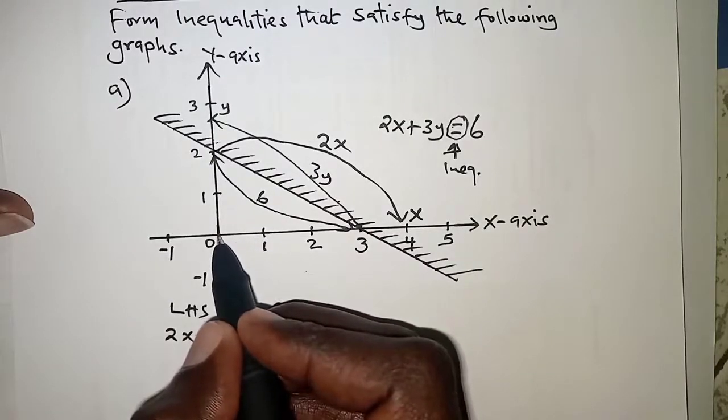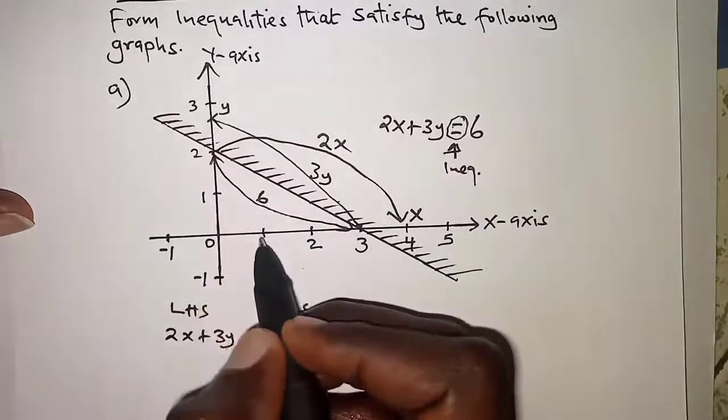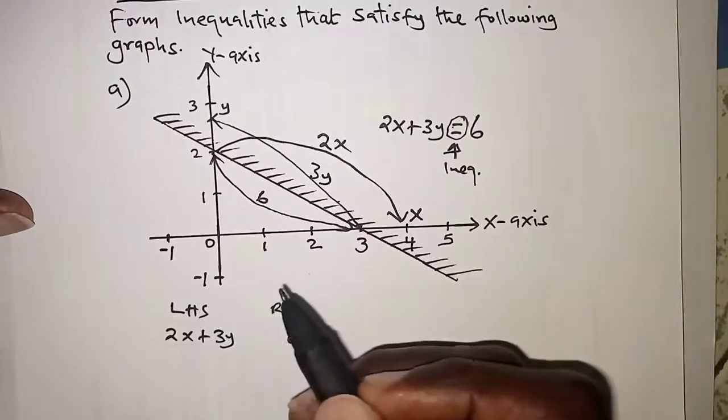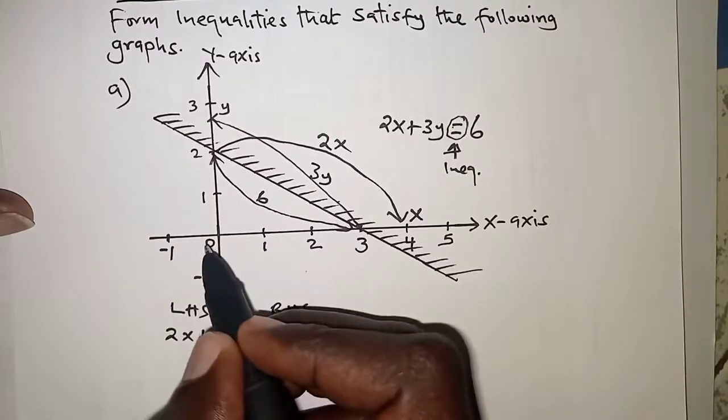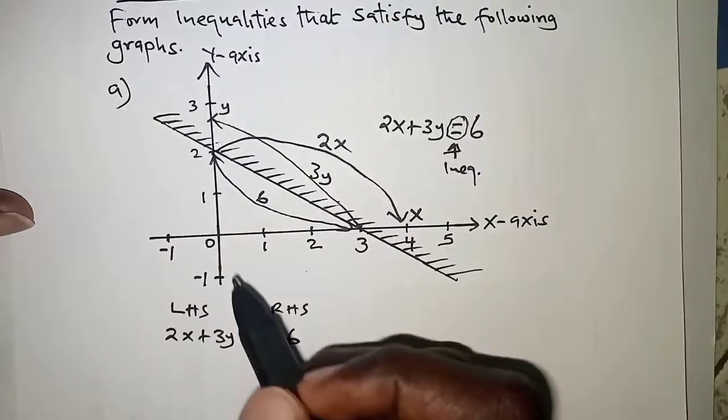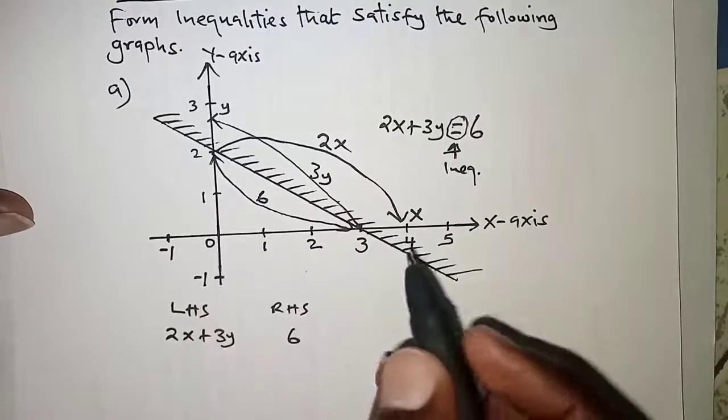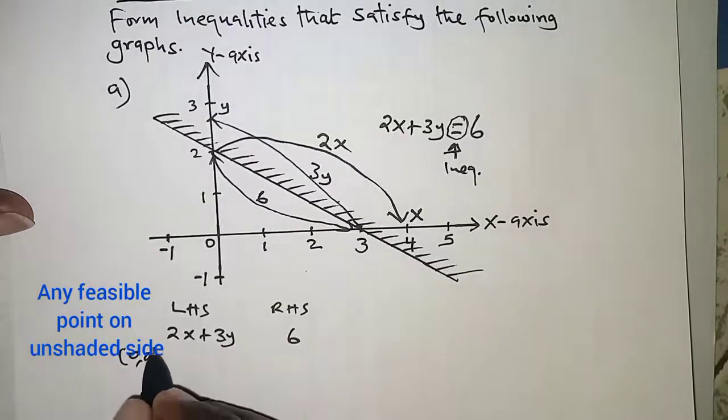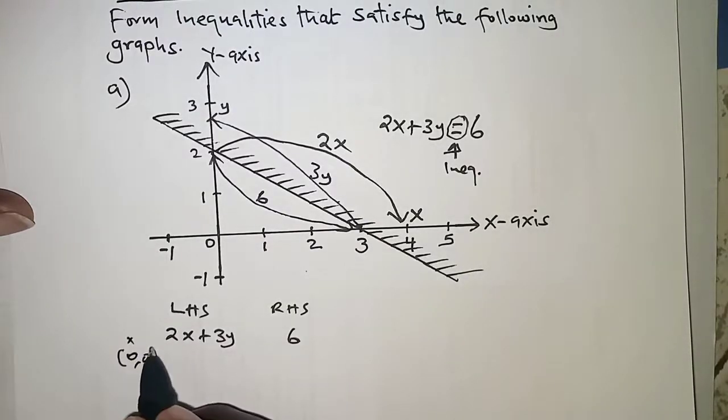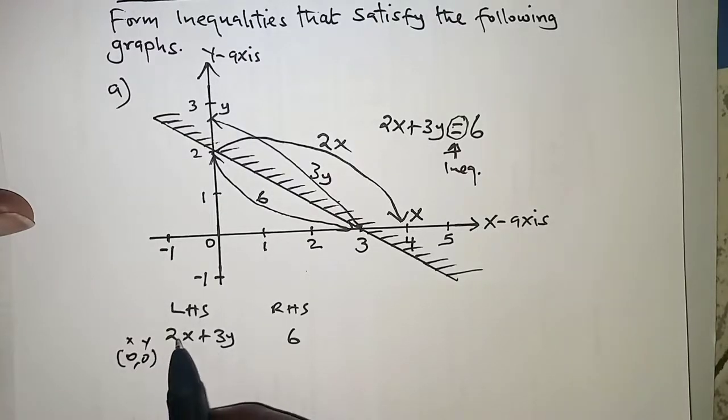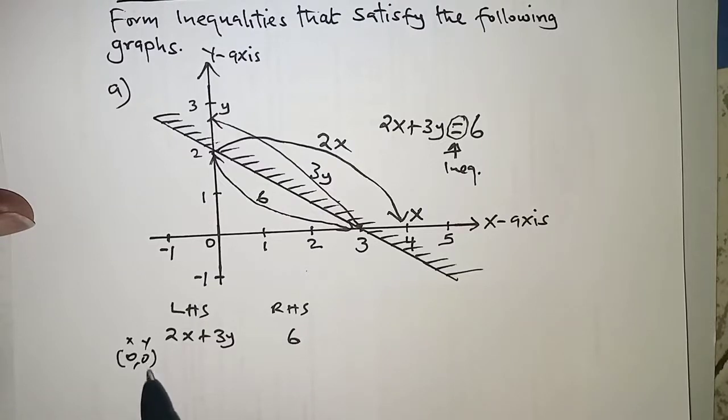My favorite point is usually the origin if the line doesn't pass through the origin. So we'll pick point (0,0) where x is zero and y is also zero. Replacing the x and y here with the value (0,0) for the point, we'll have 2(0) + 3(0), so on the left hand side we have zero.